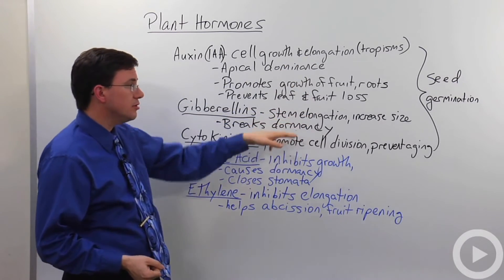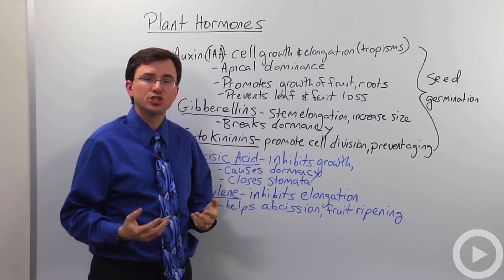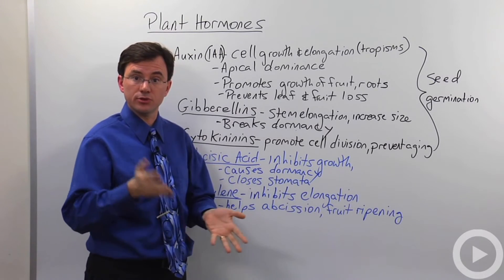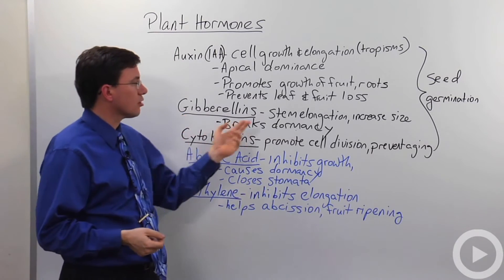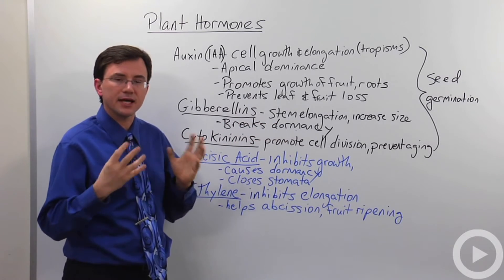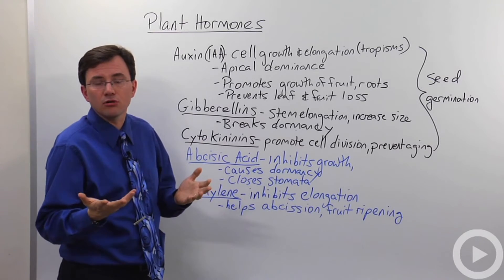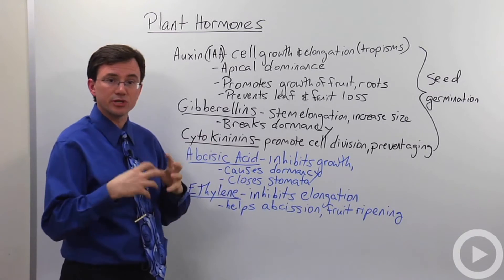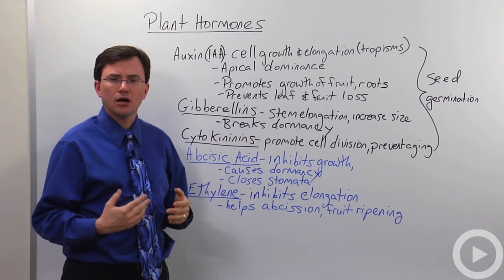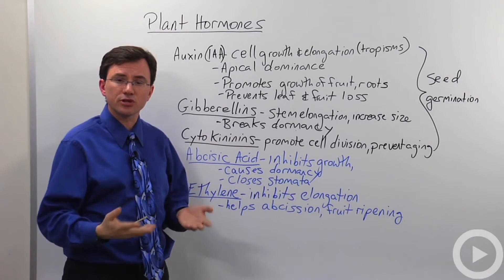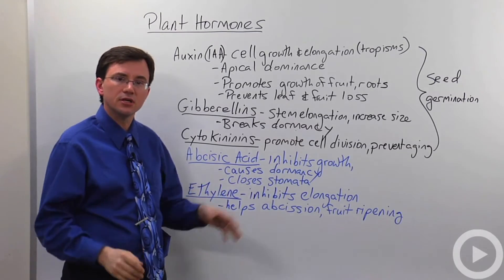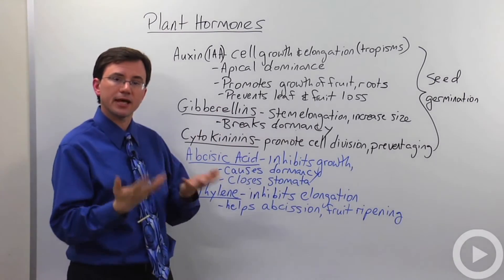Auxins are also involved in seed germination — when a seed goes from being a standard seed to an active seed growing into a new plant. Gibberellins are involved in stem elongation and increasing the size of plant parts. Growers of grapes can spray gibberellins to increase the size of their grape yield. Gibberellins are also involved in breaking dormancy — the greatly slowed-down stage that many trees enter during winter — helping the plant become active again.